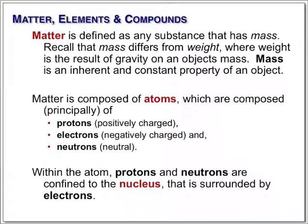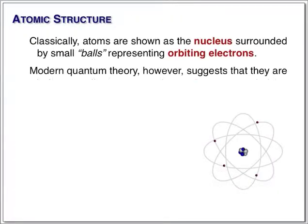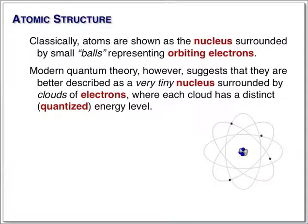Protons and neutrons are in the nucleus, and the electrons surround the nucleus. This is a very classic depiction of an atom that shows a large nucleus and electrons surrounding a nucleus in little orbits.